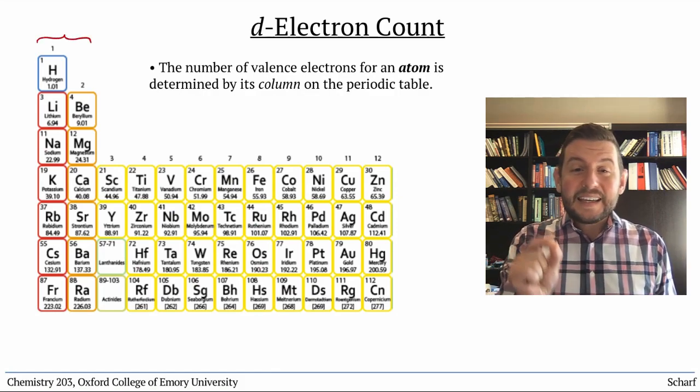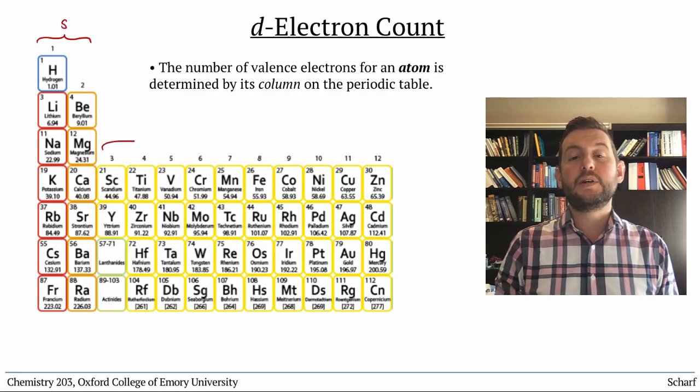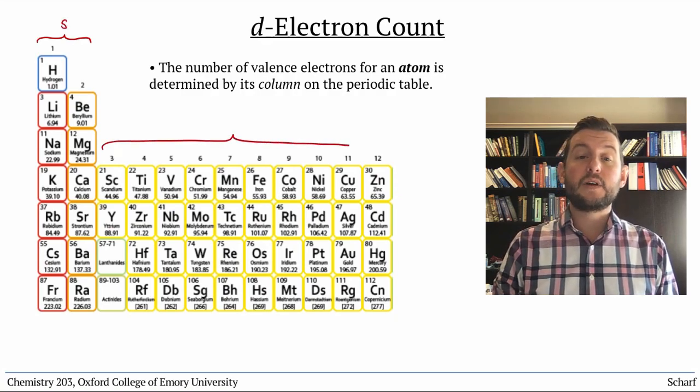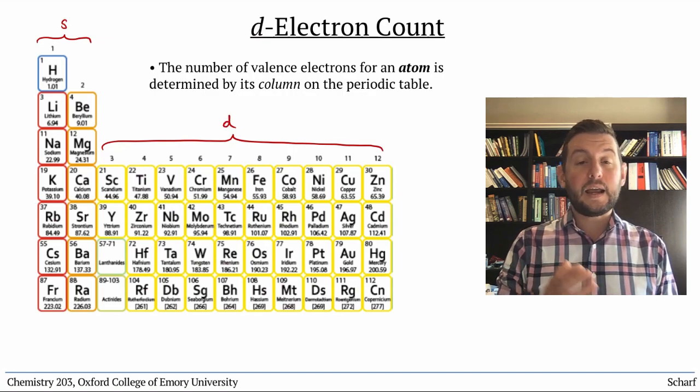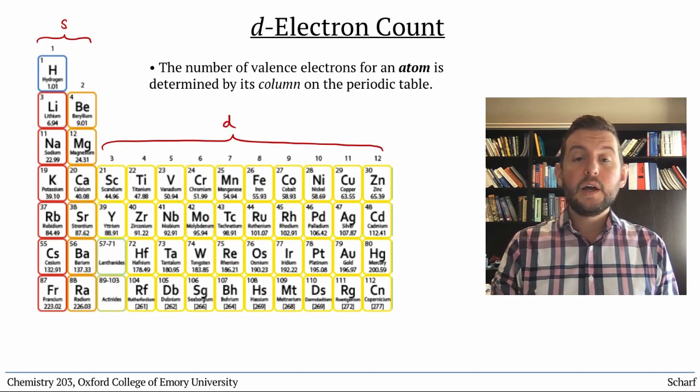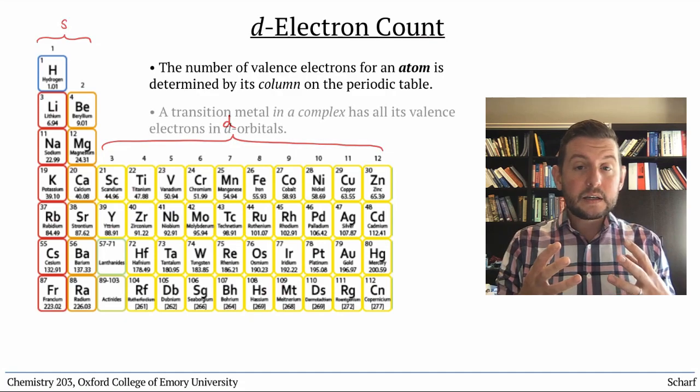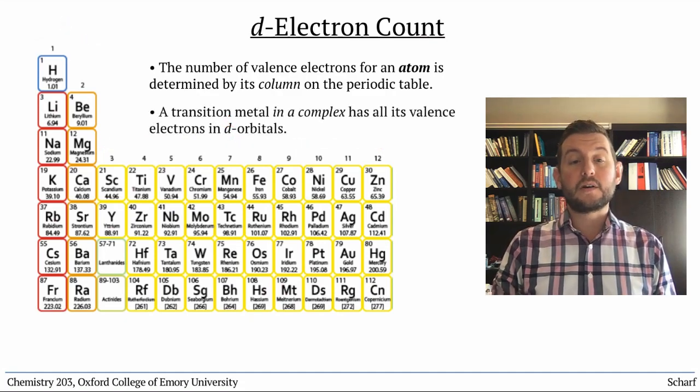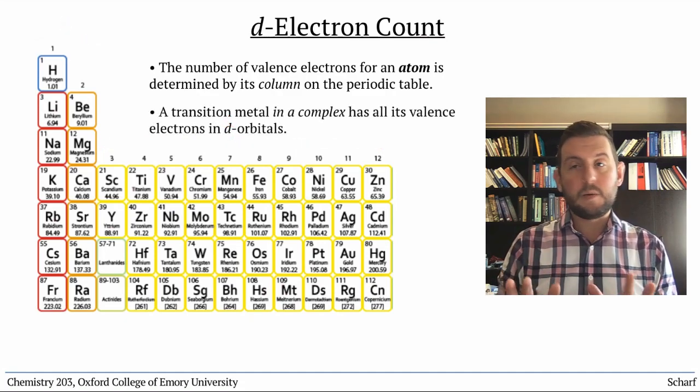While an isolated individual atom of a transition metal has valence electrons in both s and d orbitals, whenever a metal is in a complex, all of its valence electrons are in d orbitals, unless there happen to be more than 10.